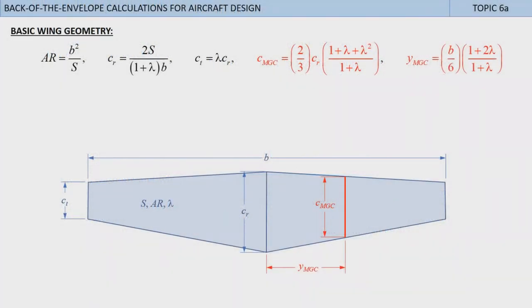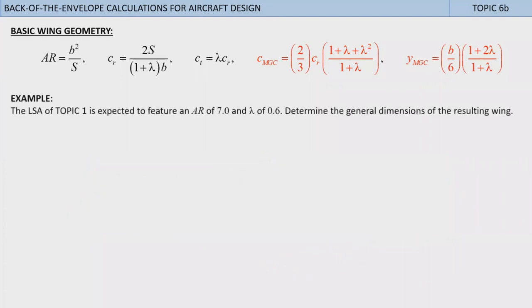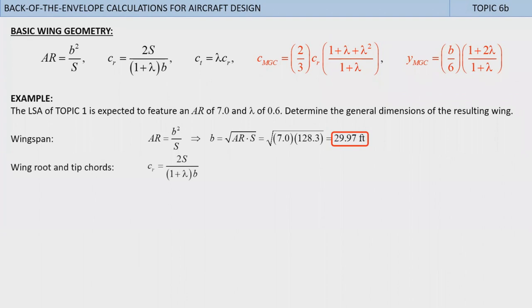Then consider this example. The LSA of topic 1 is expected to feature an AR of 7 and taper ratio of 0.6. Determine the general dimensions of the resulting wing. Note that there is no information given about any sweep, but an LSA is pretty much going to feature a straight wing, so this is not a problem. We can quickly calculate the required wingspan using the expression for the aspect ratio. Solve for b. Plug the aspect ratio of 7 and wing area of 128.3 square feet. This returns just about 30 feet. To calculate the root chord, we use the second equation from the left, unmodified. Substitute the knowns and chug. This returns 5.351 feet.